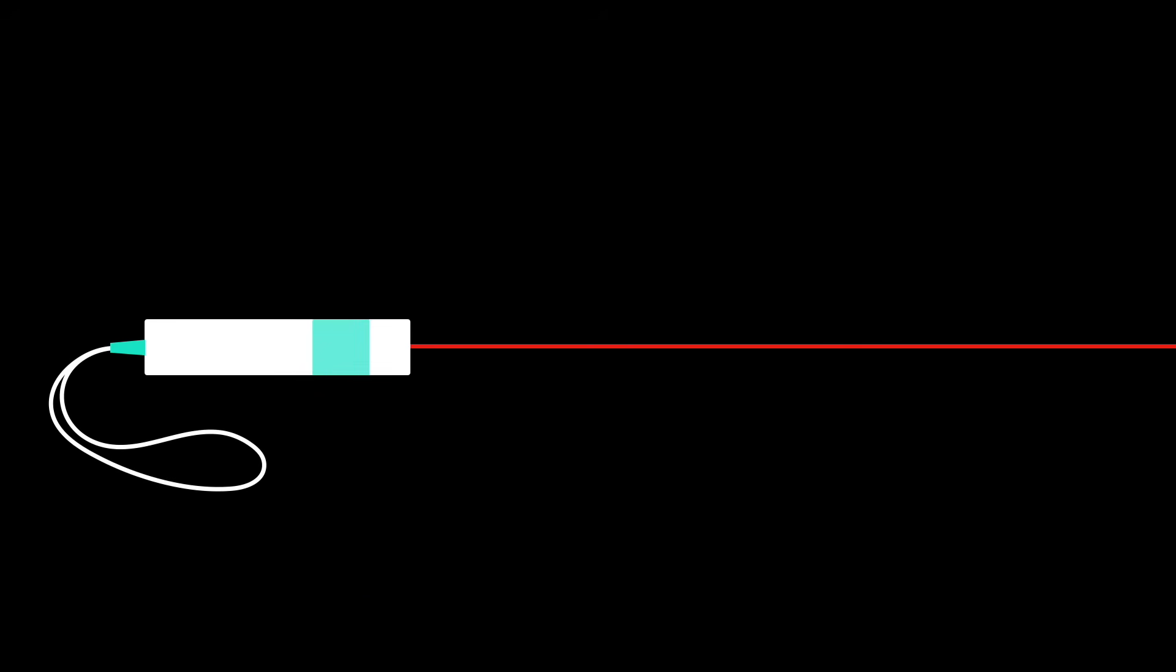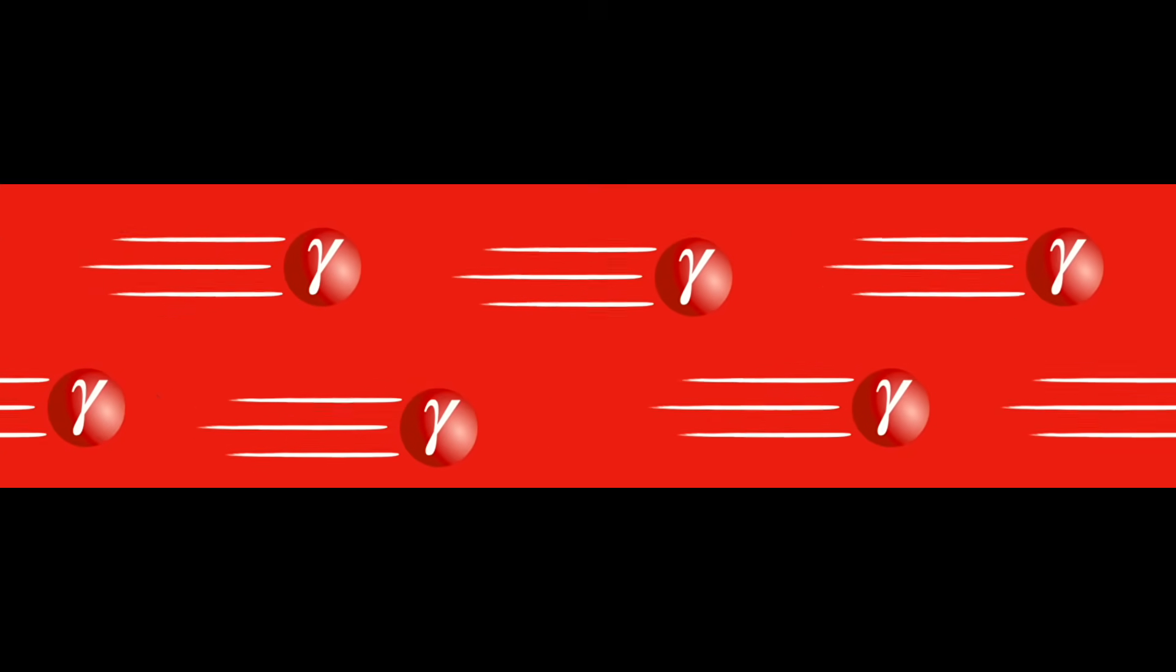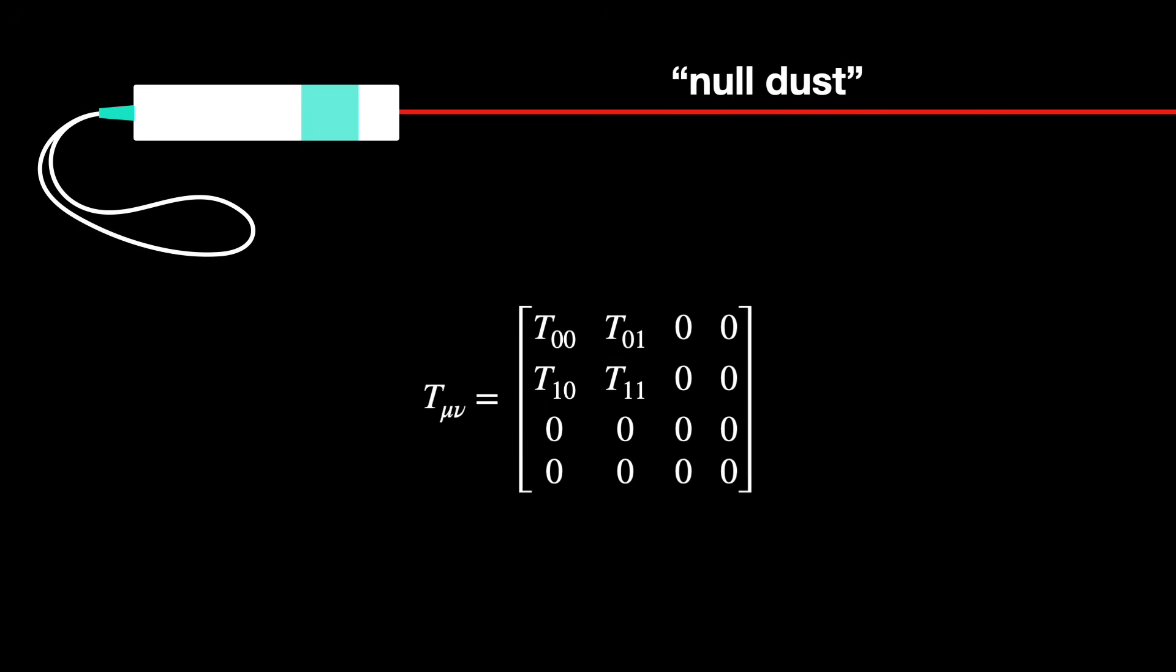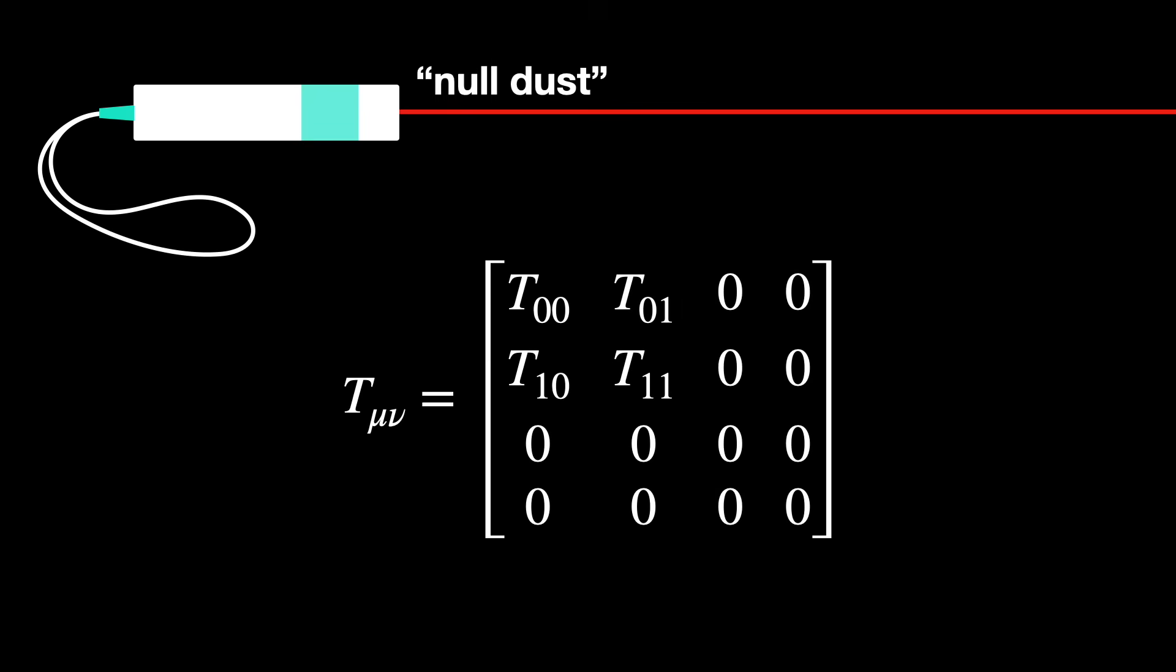More concretely, imagine a narrow beam of light traveling in the x-direction, like a laser. This is a classic example of what's called a null dust, a stream of massless particles, such as photons, all moving together at the speed of light. The tensor for this system stores information about how energy and momentum are distributed and how they flow through spacetime.